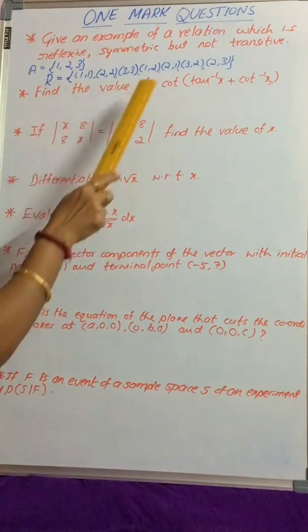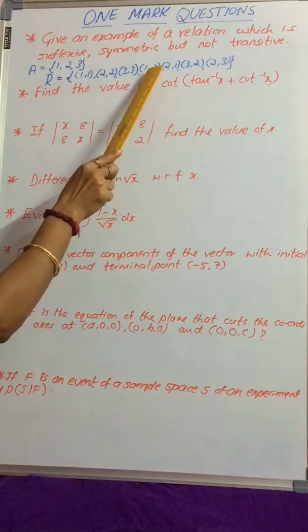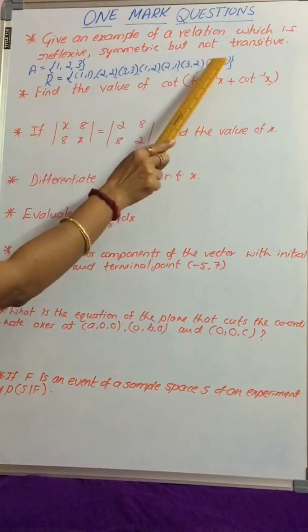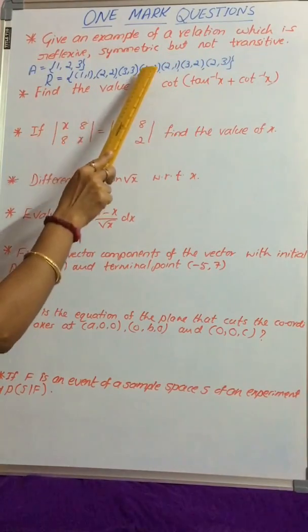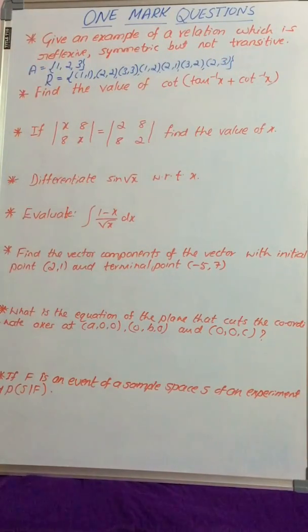But it is not transitive because (1,2) belongs to R and (2,3) also belongs to R, but (1,3) does not belong to R. Therefore it is not transitive.